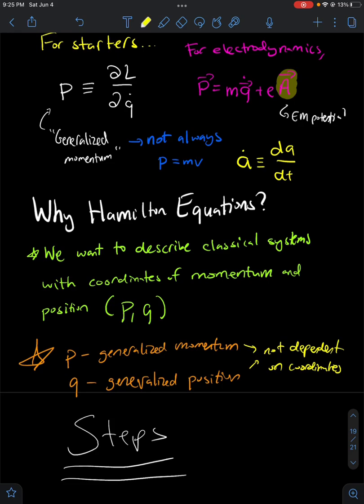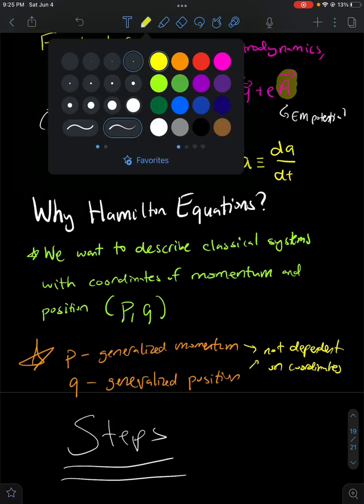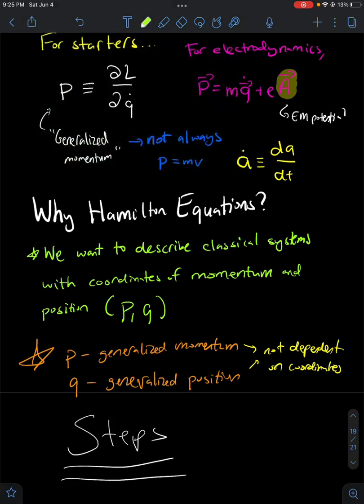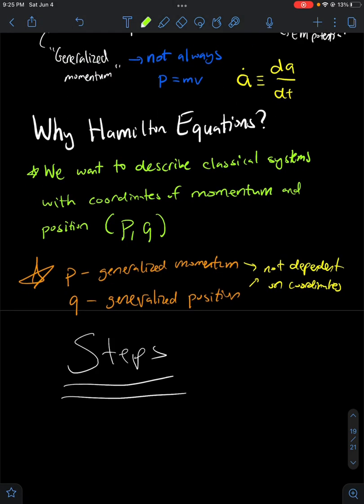Also, q will have many indices. So we will have q_i, technically speaking, where we can have q1, q2, q3, and so on, which represents the many dimensions of our system.